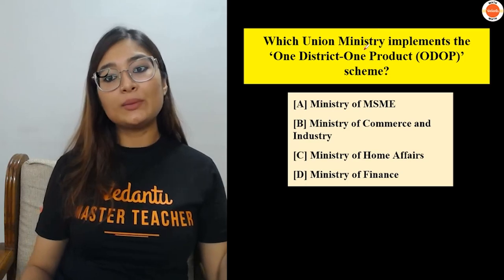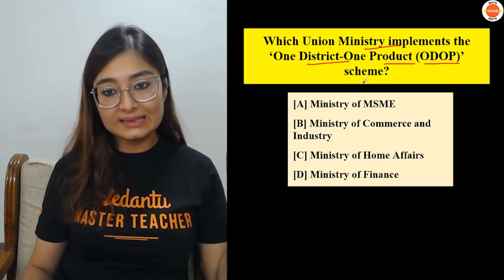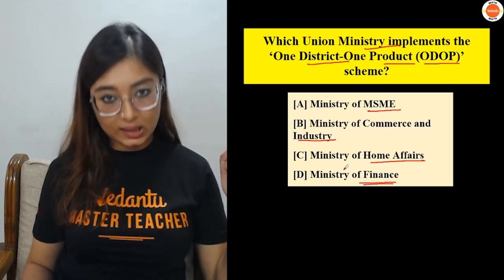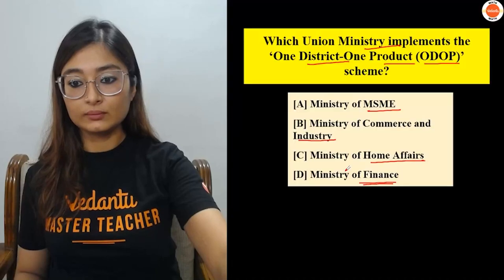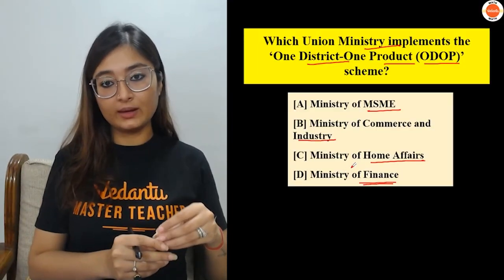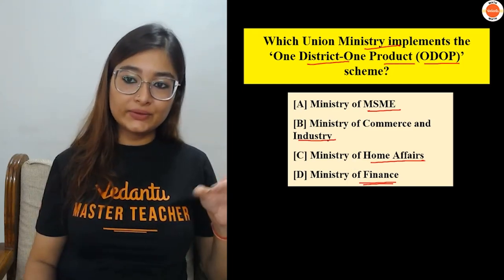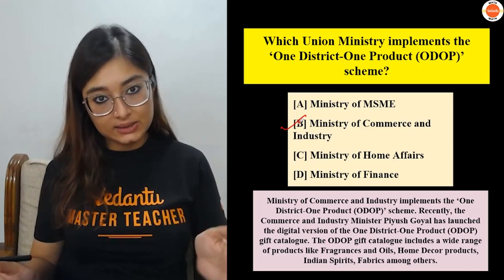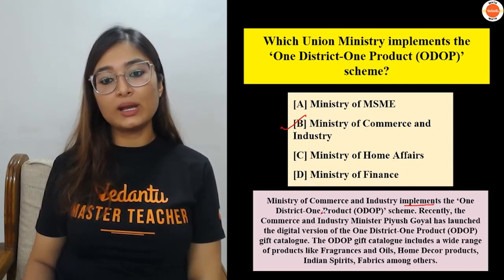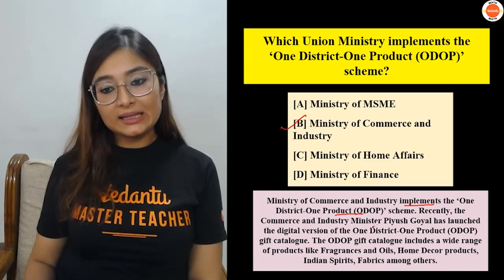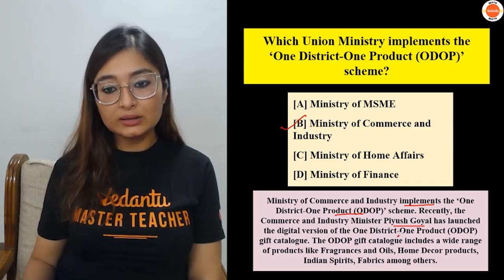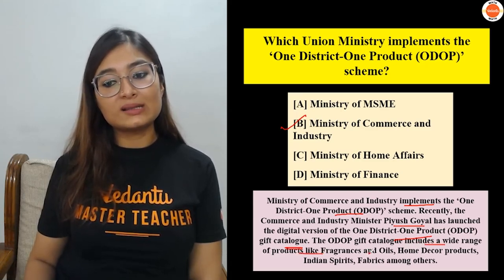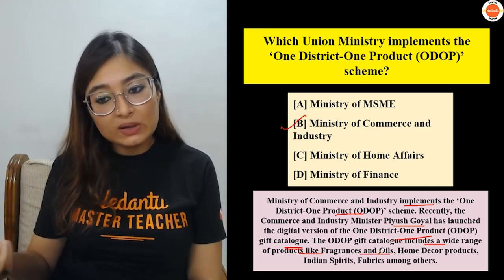Next question: Which Union Ministry implements the One District One Product scheme? Options: Ministry of Home Affairs, Ministry of Finance, or another. The correct answer is Ministry of Commerce and Industry. They recently launched the digital version of the gift catalog, which includes products such as fragrances, oils, home decor products, and other local products.